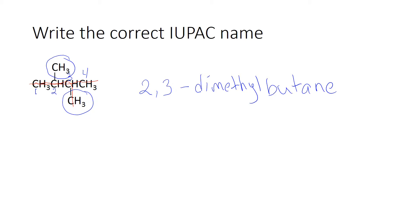So again, this is telling me that I have a four-carbon chain for my longest with a single bond, and two methyl groups coming off of carbons two and carbon three.